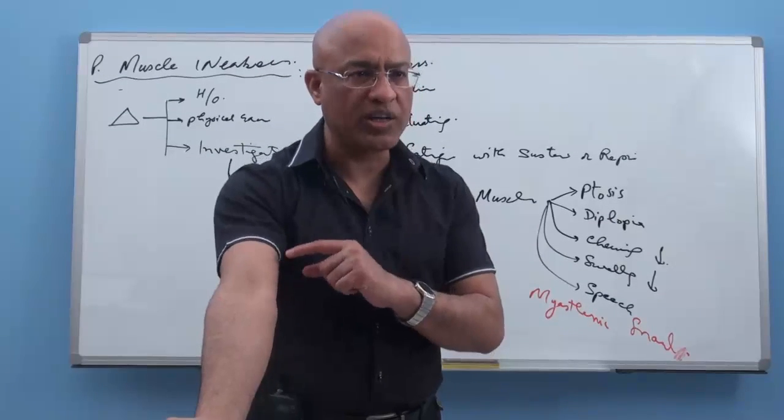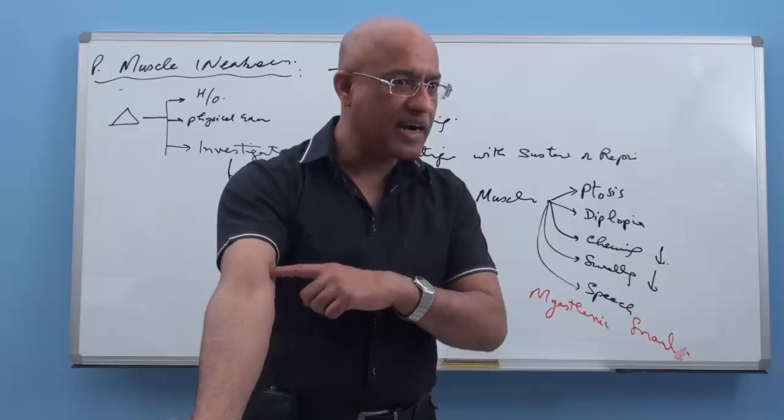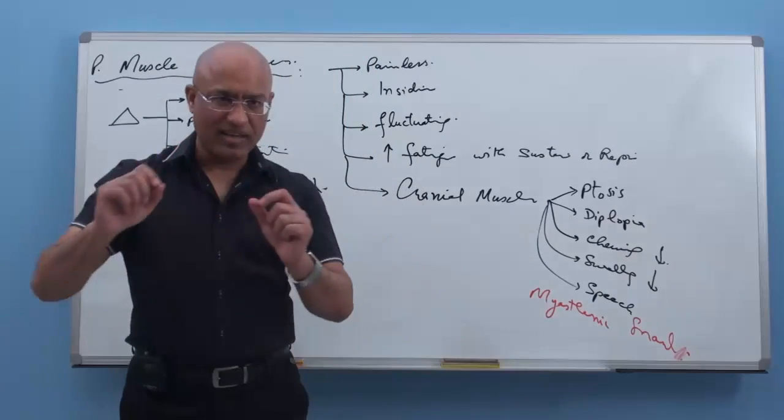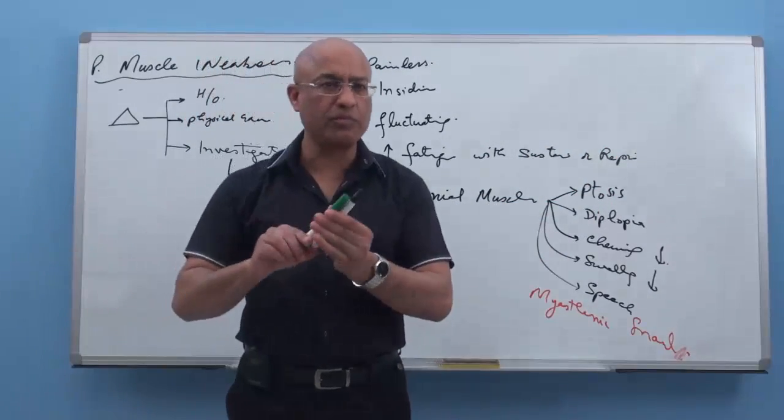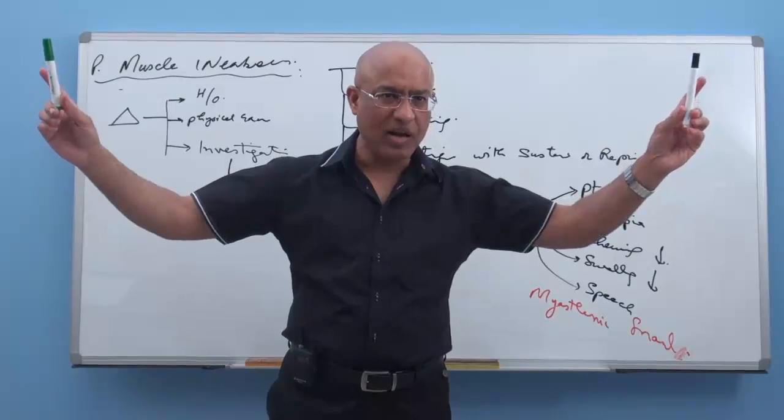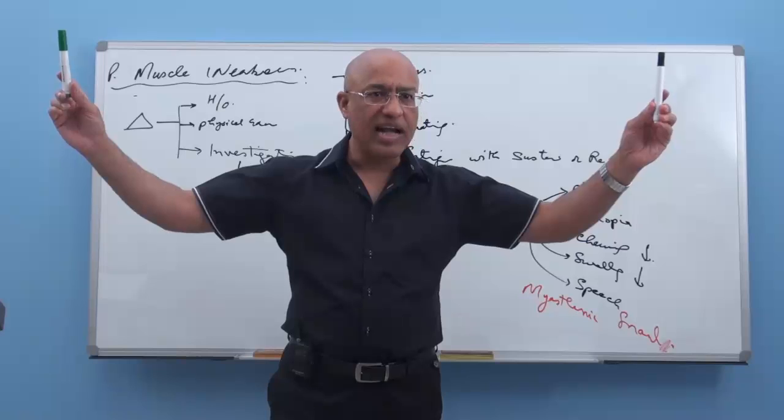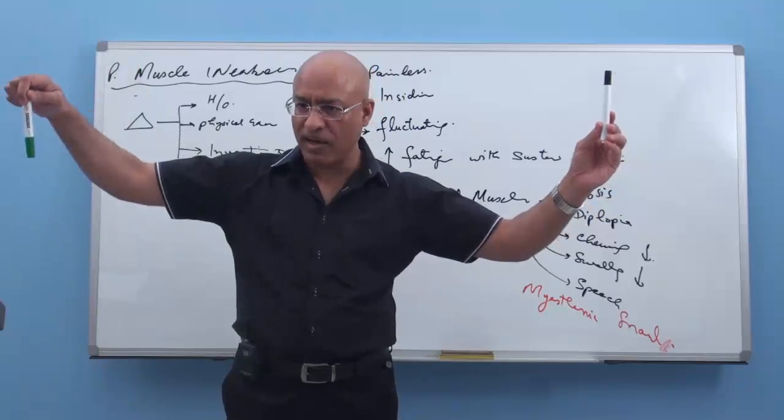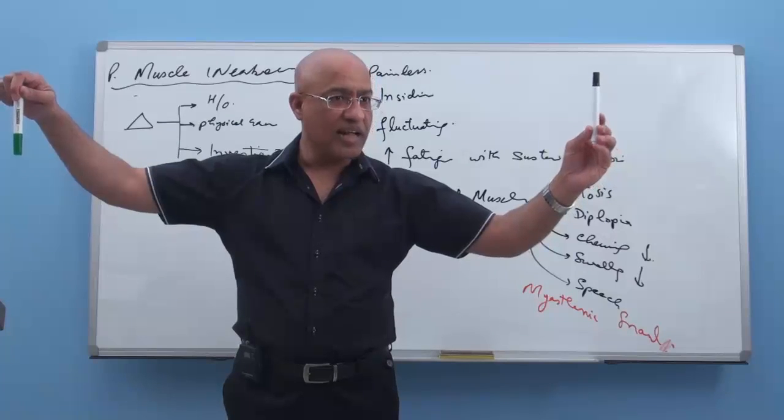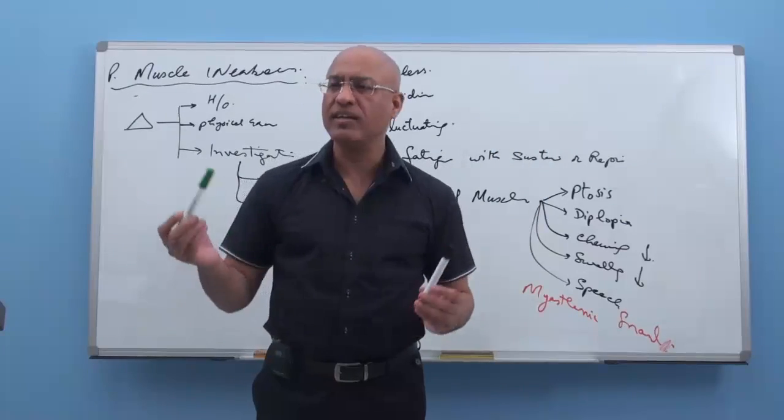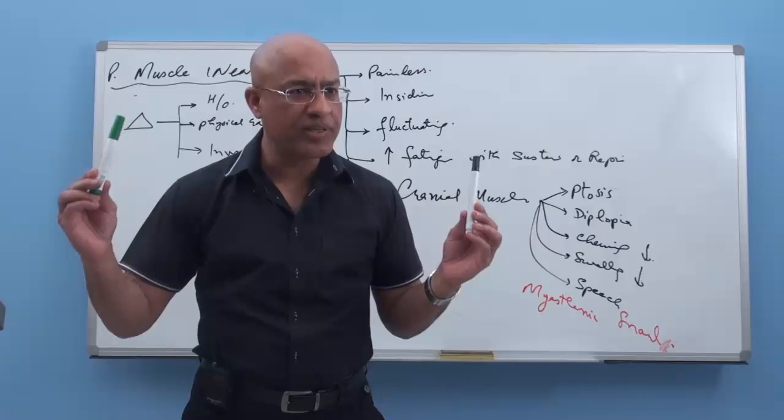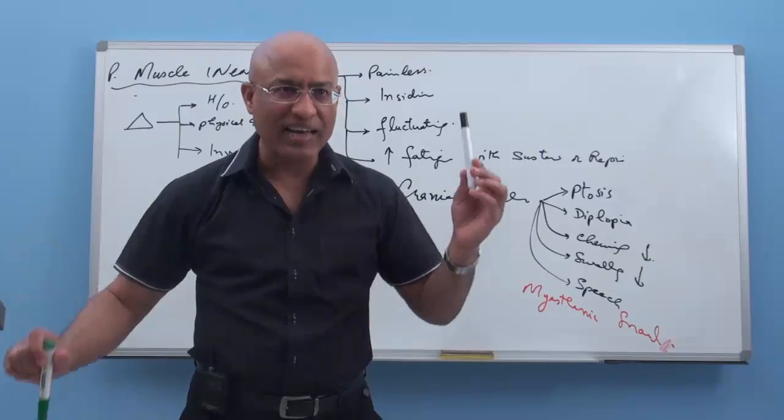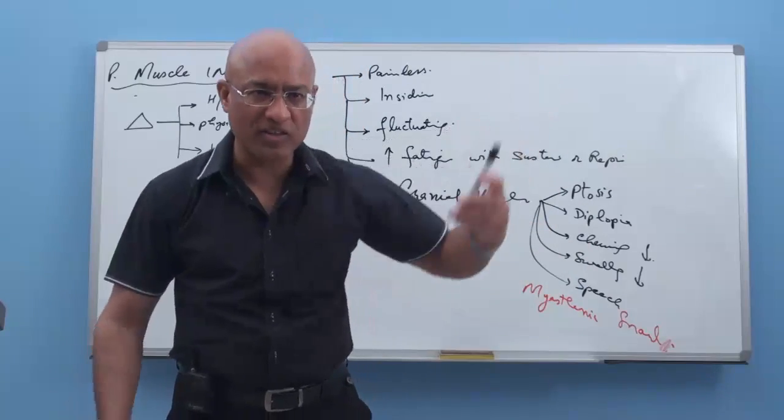In Lambert-Eaton patient, if you do repetitive stimulation to a specific motor nerve, the motor response transiently becomes more. If here is a patient with myasthenia gravis and this is a patient with Lambert-Eaton, in both cases you stimulate the motor nerve repeatedly and look at the motor response. Here, the muscle motor response will progressively become down. And here, muscle response will at least transiently increase. So the word which is used is that repetitive stimulation of motor nerve to a specific muscle is followed by decremental response. And here, same activity leads to incremental response.